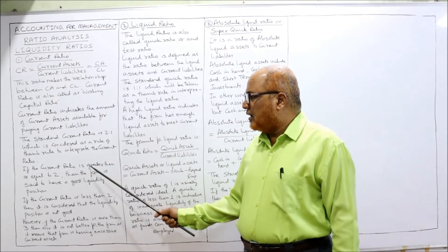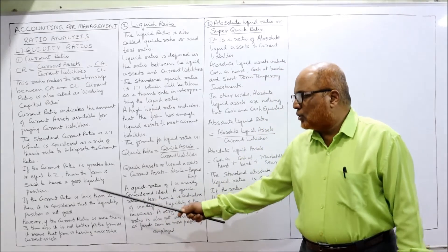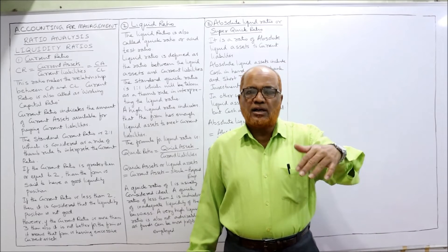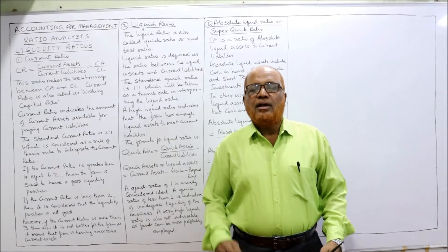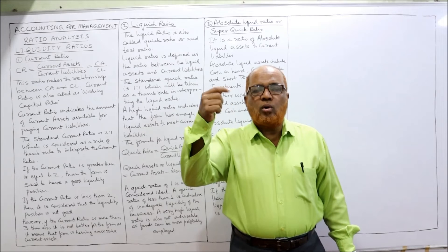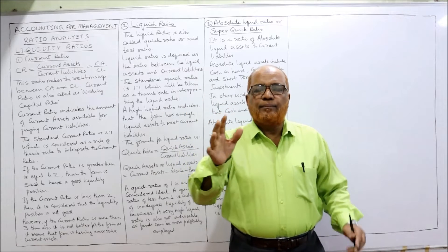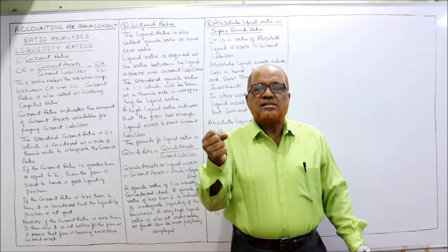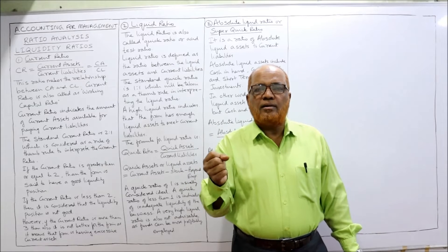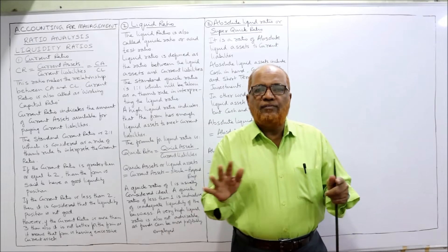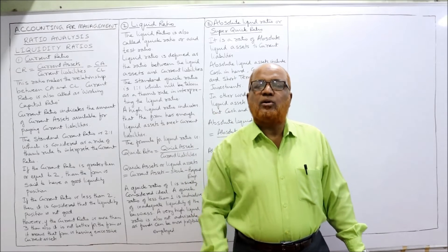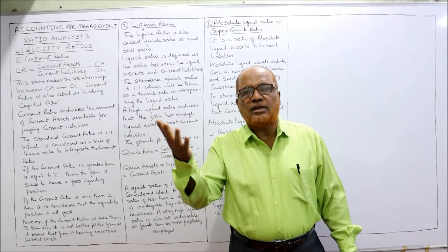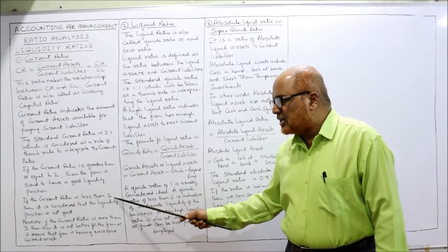For the purpose of interpreting the ratio: if the current ratio is greater than or equal to 2, the firm is said to have a good liquidity position — the business can pay all current obligations on time with no difficulty. If the current ratio is less than 2, the liquidity position is considered not satisfactory.